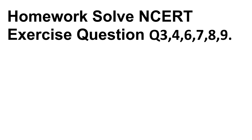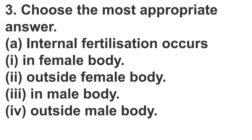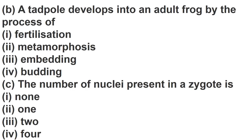The homework is to solve NCERT explanation questions: Question 3, Question 4, Question 6, Question 7, Question 8, and Question 9. Question 3: Choose the most appropriate answer. Part A — internal fertilization occurs: in female body, outside female body, in male body, or outside male body. Part B — a tadpole develops into an adult frog by the process of: fertilization, metamorphosis, embedding, or budding. Part C — the number of nuclei present in a zygote is: none, one, two, or four.